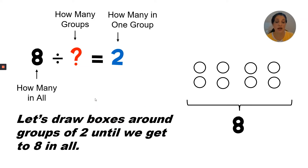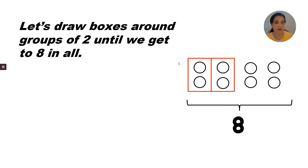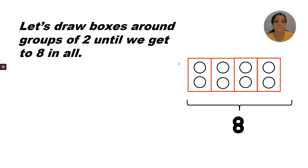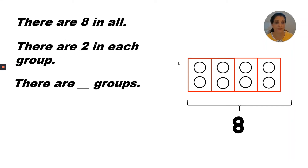Let's draw boxes around groups of 2 until we get 8 in all. Remember, our boxes are going to be columns: 1, 2, 3, 4. How many in each group? And how many groups? There are 8 in all, there are 2 in each group — an equal number of 2 in every group. And there are how many groups? 1, 2, 3, 4. There are 4 groups.